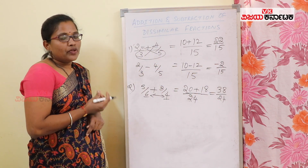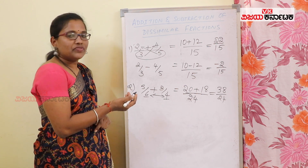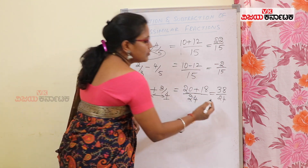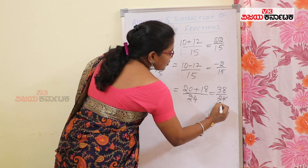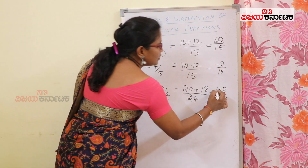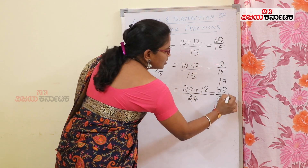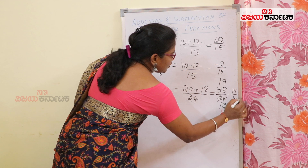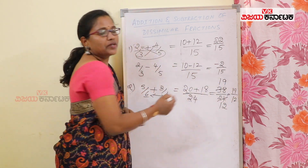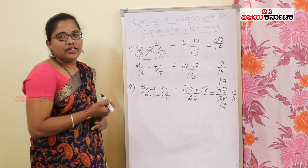38 and 24 — can we simplify further? Yes, we can simplify. Starting with two, two ones are two, so we get 19 by 12. 19 is a prime number, so further division is not possible, and the answer is 19 by 12.